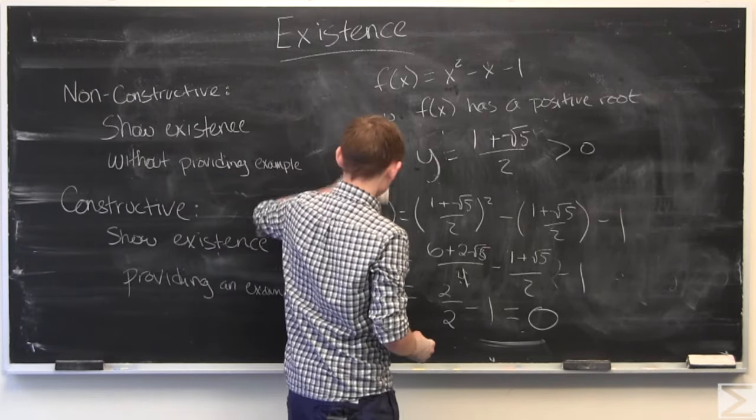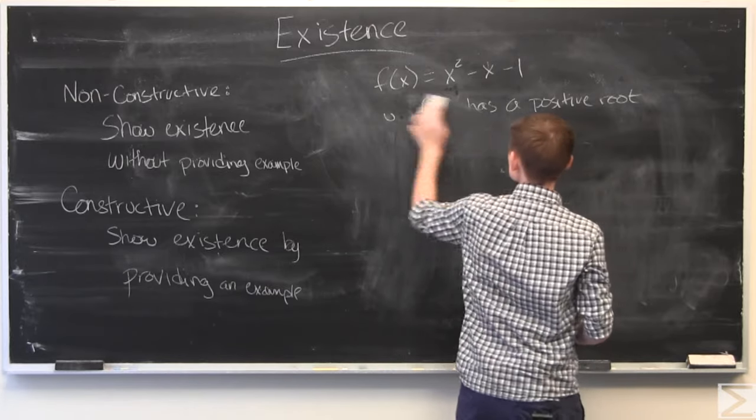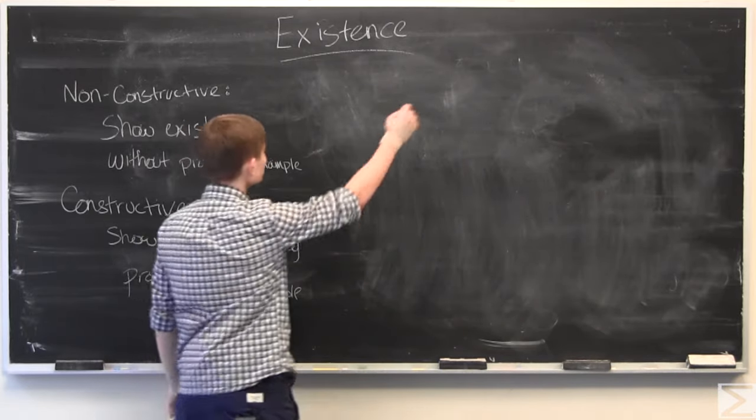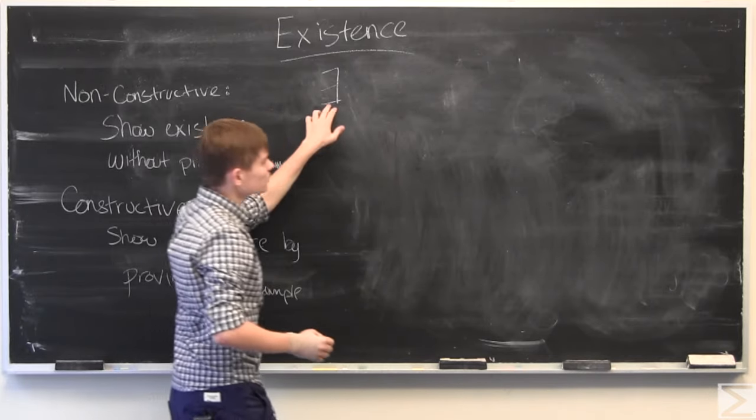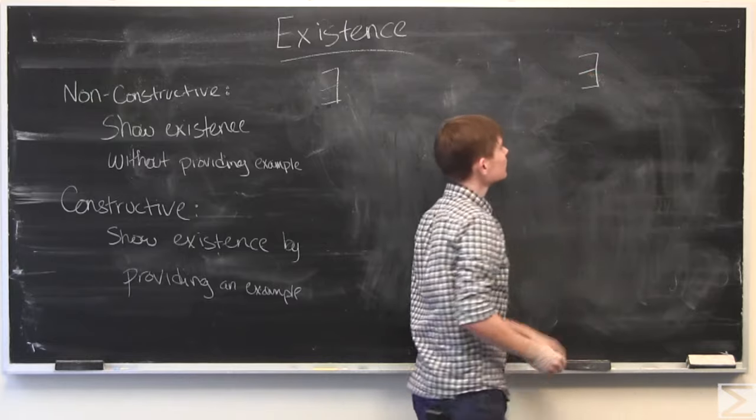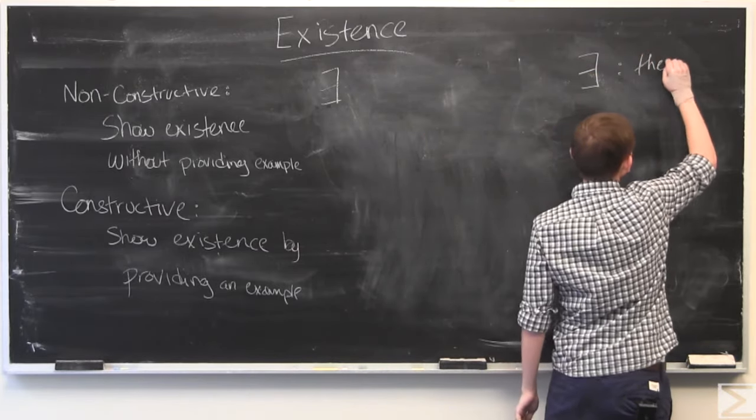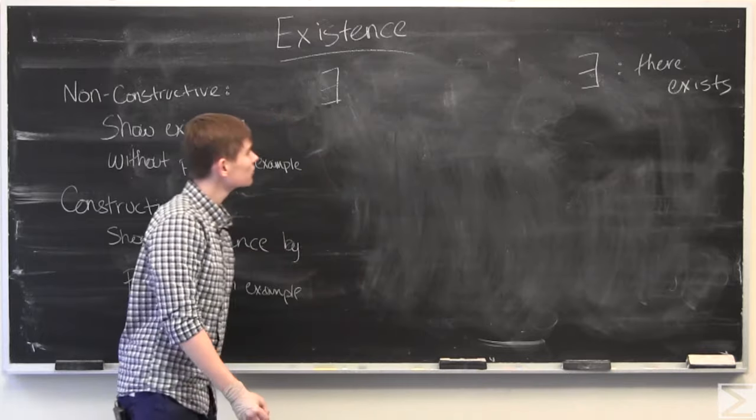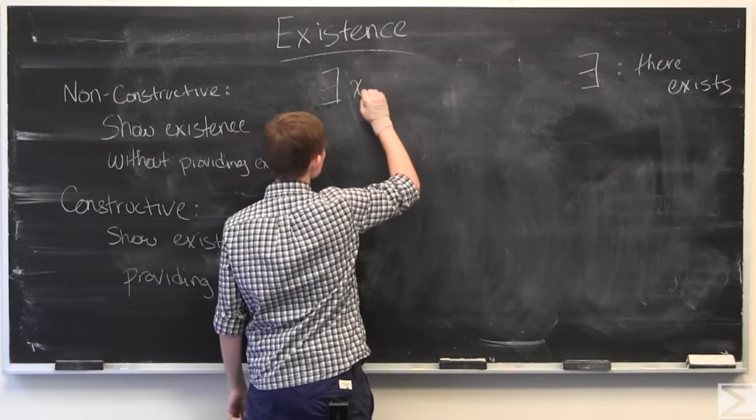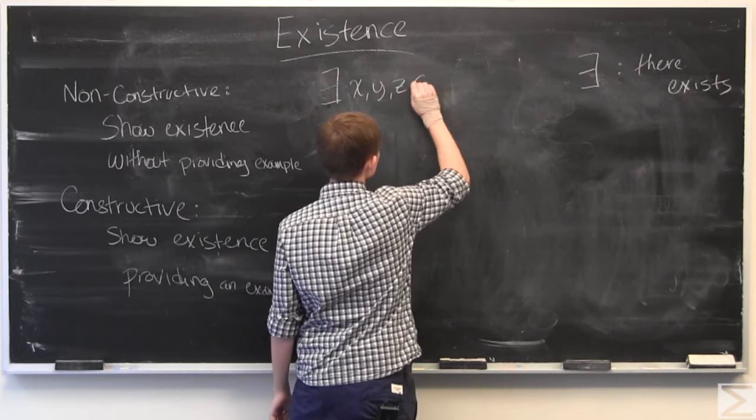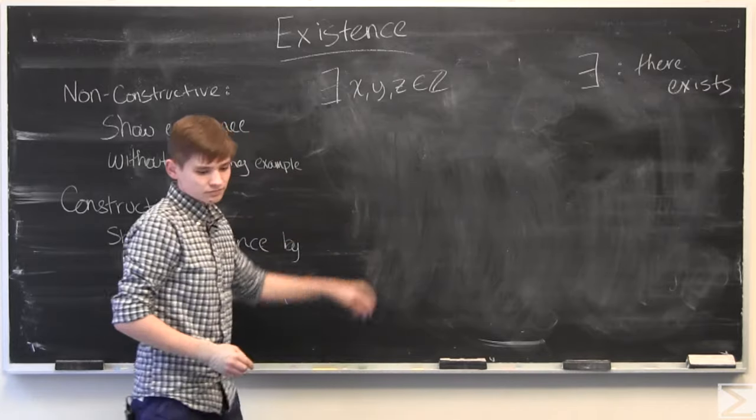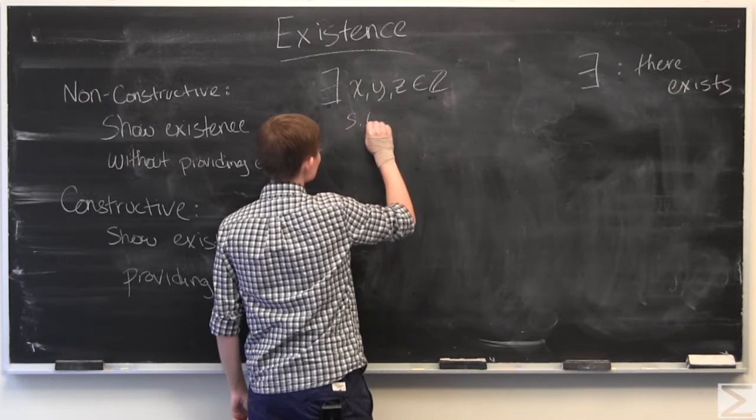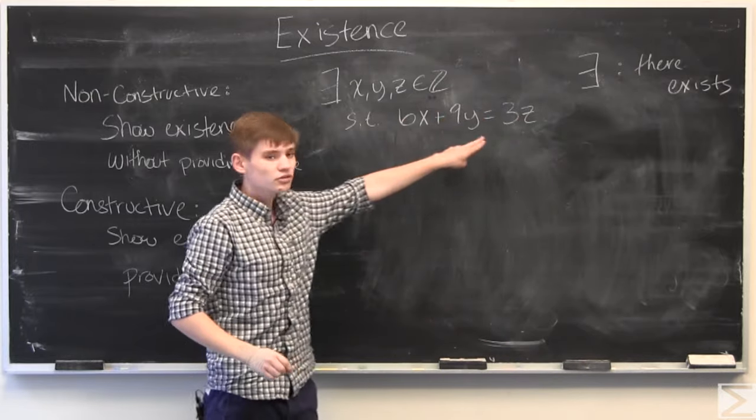Another example of a constructive proof of existence will be to show that, by the way, I should probably mention, this symbol just means there exists, it's just one of those math symbols that we use in proofs. So, there exists x, y, z, which are integers, such that they are a solution to this equation.